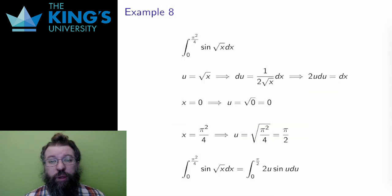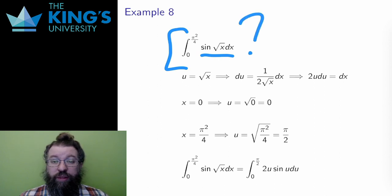Finally, here is one more example. This example shows that sometimes multiple integration techniques have to be put together to solve an integral. I want to integrate sine of the square root of x from zero to pi squared over four. This doesn't look very promising at the start. There's not much to work with.